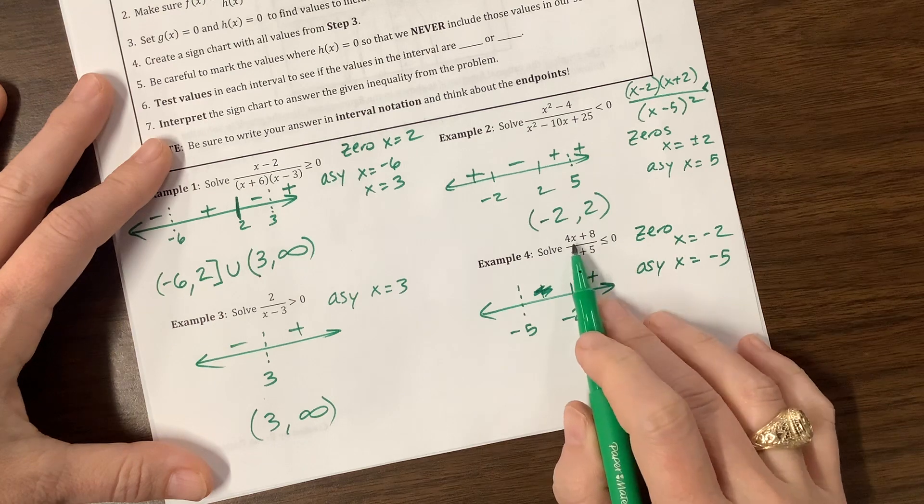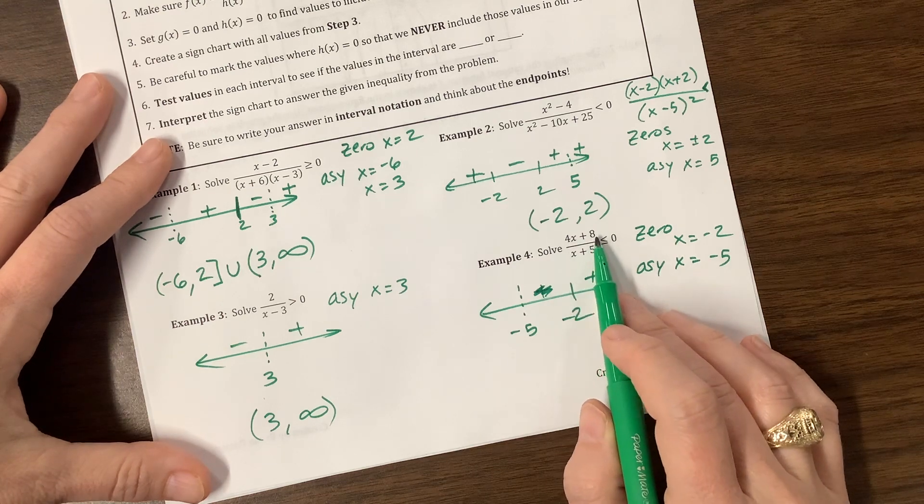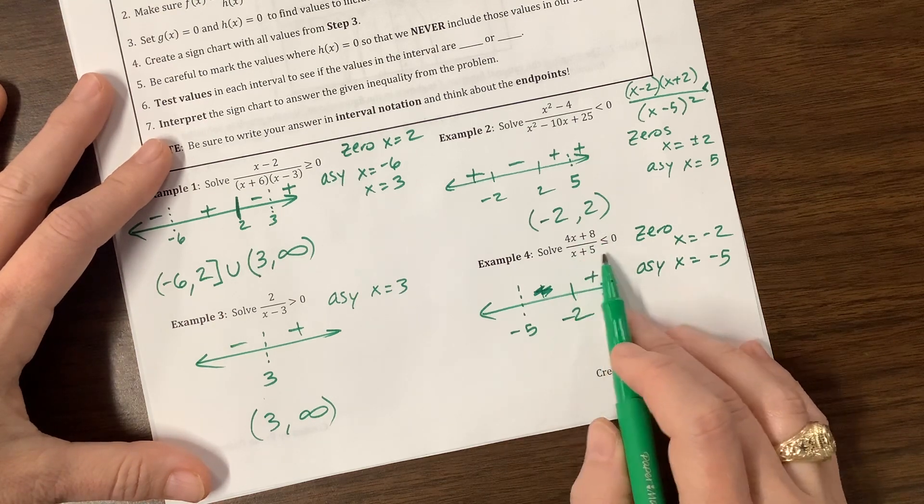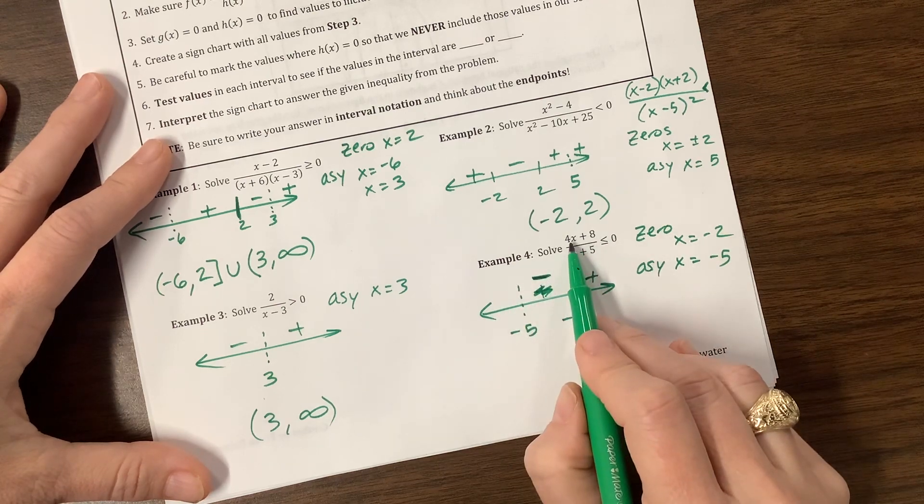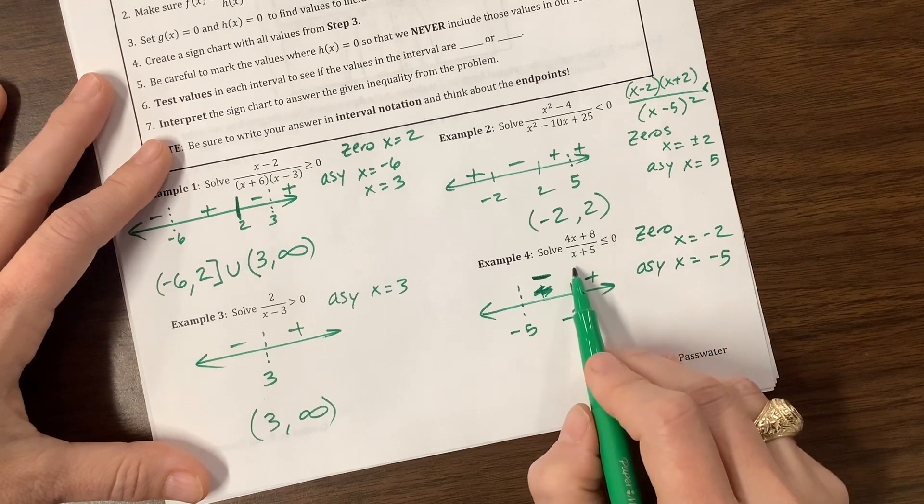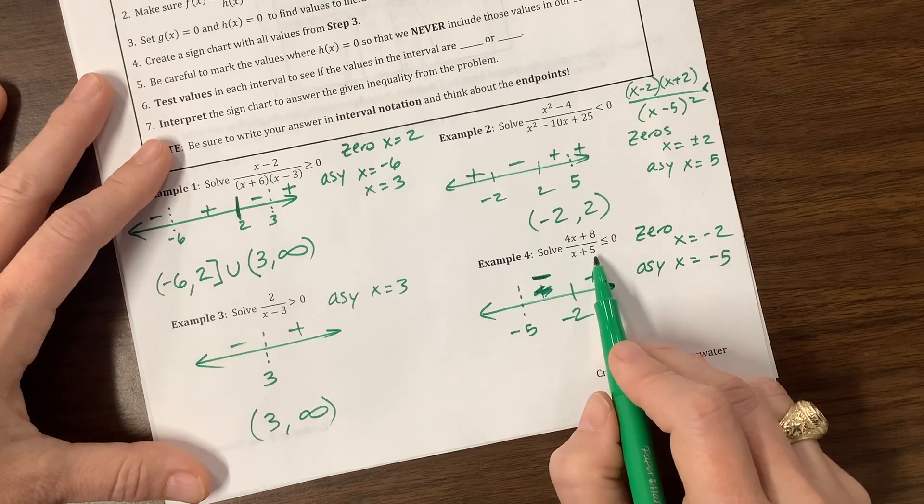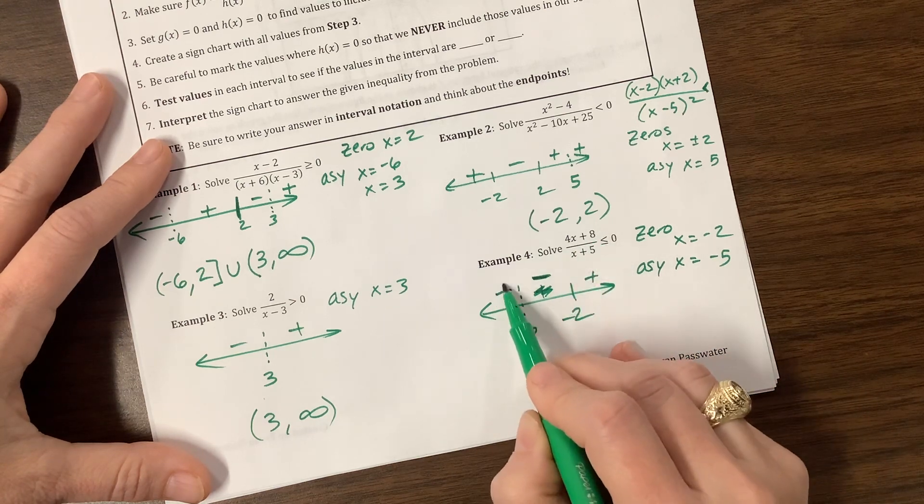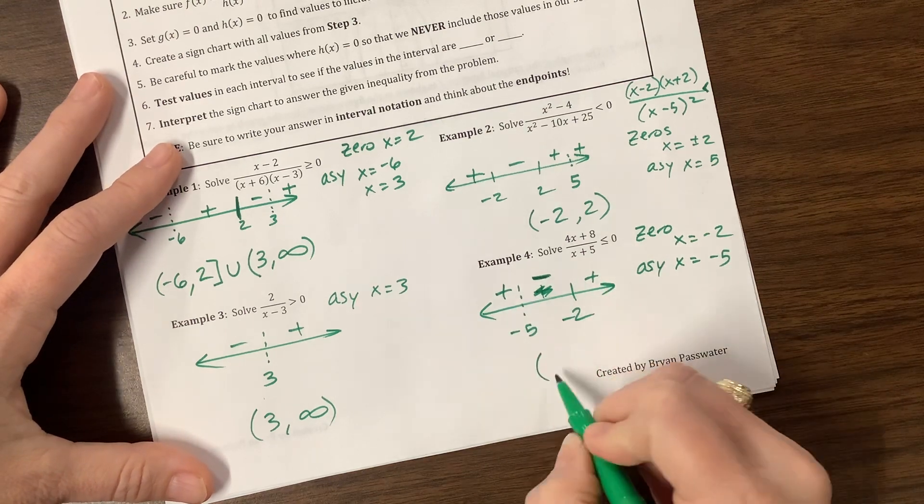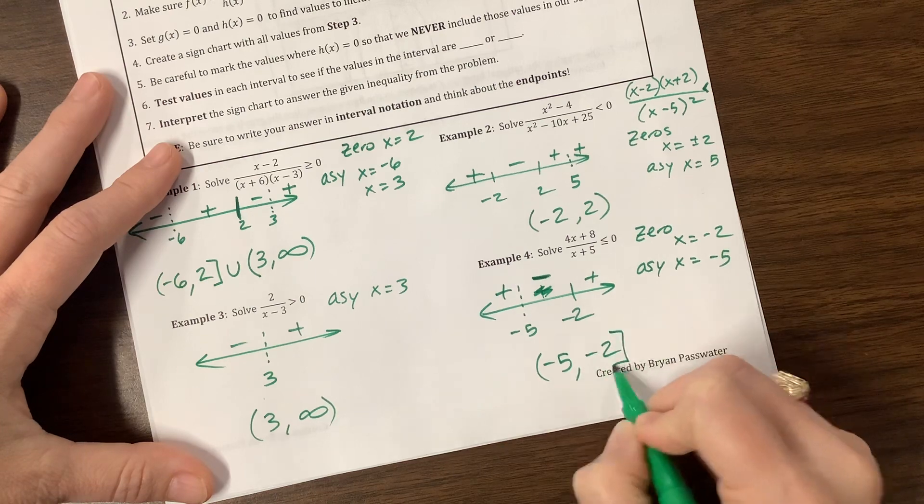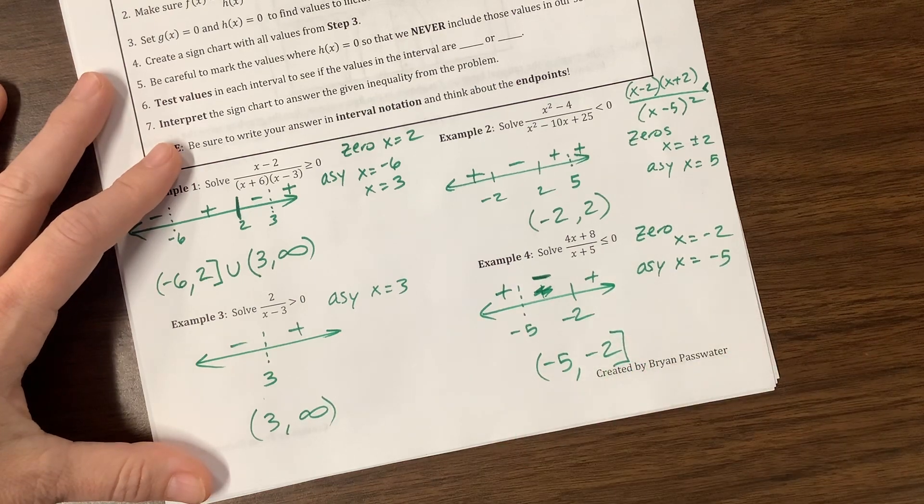Let's plug in negative 3. Negative 12 plus 8 is a negative. Negative 3 here, that stays positive, that's a negative. Plug in negative 6, that's negative 24, plus 8 is still negative. Negative 6 plus 5 is now still negative. Negative over negative is a positive. Okay, so where are we less than or equal to 0? Well, we're less than or equal to 0 from negative 5 to negative 2. We can equal negative 2, we cannot equal negative 5.